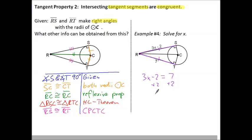So add 2 on both sides. 3X is equal to 9. Divide by 3. And X is equal to 3. There's your answer.